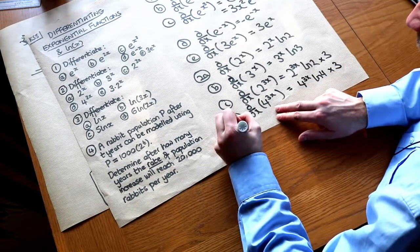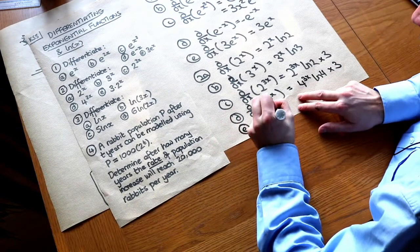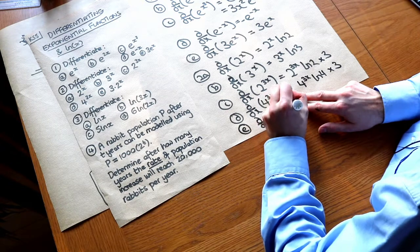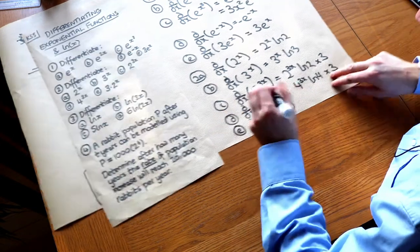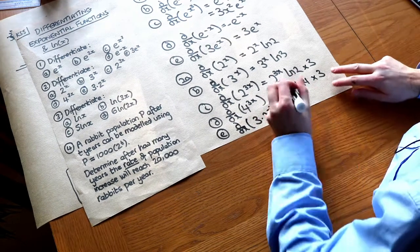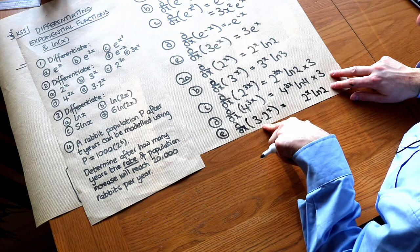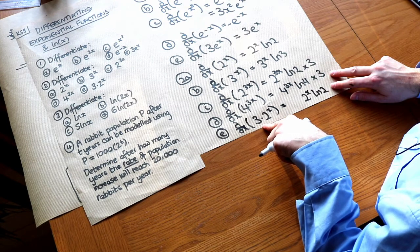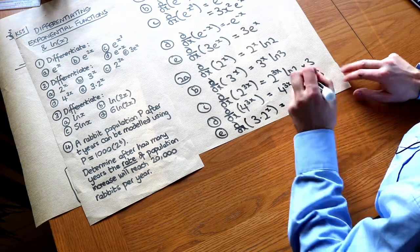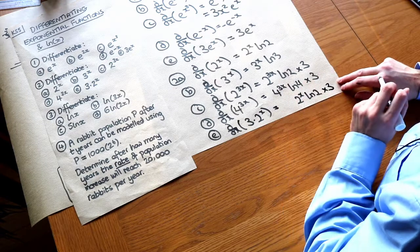And then finally e when we differentiate 3 lots of 2 to the x. That dot just means multiplied by. It's not a decimal point. We differentiate the 2 to the x there. So it's 2 to the x ln 2. But because we scaled this expression by 3, we times it by 3, we also scale this thing by 3 as well. So it would be times by 3.